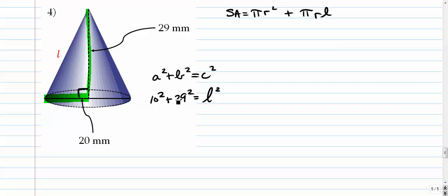We have 10 squared plus 29 squared equals slant height squared. So all we want to do is figure out that hypotenuse and it comes out to be a decimal, 30.676. That's the slant height. The radius as we said is 10, and you're good to go.